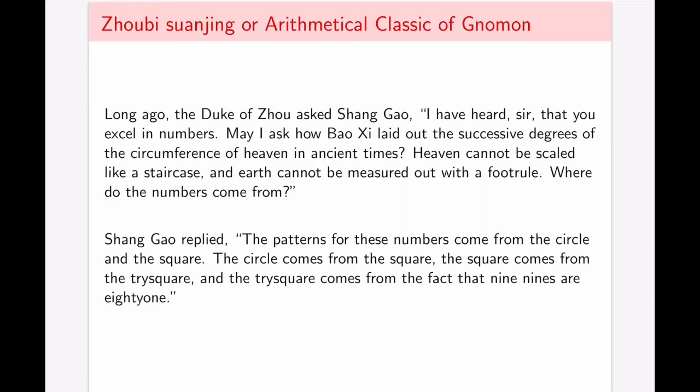He says, the patterns for these numbers come from the circle and the square. The circle comes from the square. The square comes from the tri-square, which again is the L-shaped construction type tool. And the tri-square comes from the fact that nine nines are 81. Nine nines is just a multiplication table of up to nine by nine.